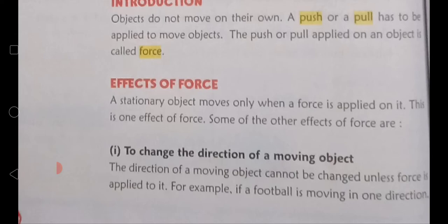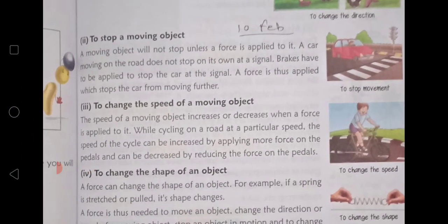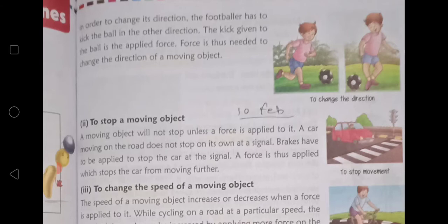For example, if a football is moving in one direction — مانا جائے football ایک direction میں جا رہی ہے — تو آپ اس کی direction change نہیں کر سکتے جب تک اس پہ force نہیں لگاتے۔ The football has to be kicked in the other direction — جب ہم football پہ kick لگاتے ہیں دوسرے direction کے لیے تب اس کی direction change ہوتی ہے۔ The kick given to the ball is the applied force. Force is thus needed to change the direction of a moving object.